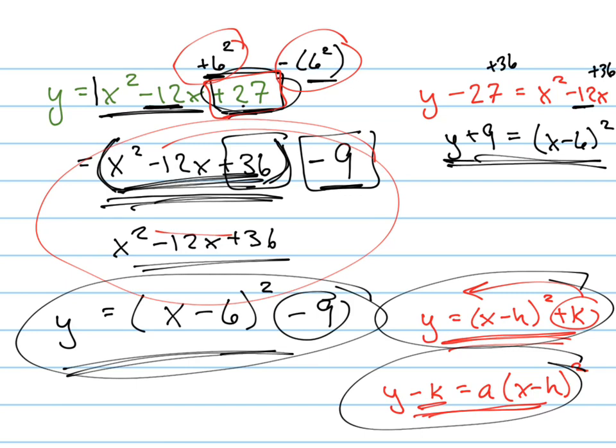So if your teacher teaches you this way, then first move everything over. That's fine. I actually like that method better too. So let's try another example. So let's say we have y equals x squared plus 6x plus 13. So your teacher wants you to subtract 13 from both sides.